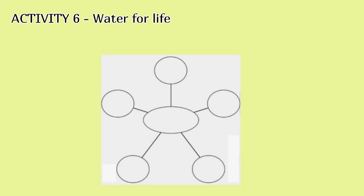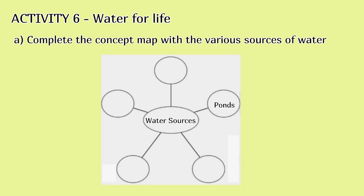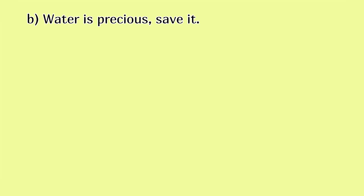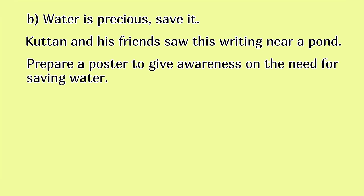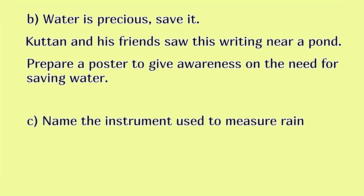Activity 6. Complete the concept map with the various sources of water: water sources, ponds. B. Water is precious — save it. Houghton and his friends saw this writing near a pond. Prepare a poster to give awareness on the need for saving water. C. Name the instrument used to measure rain.